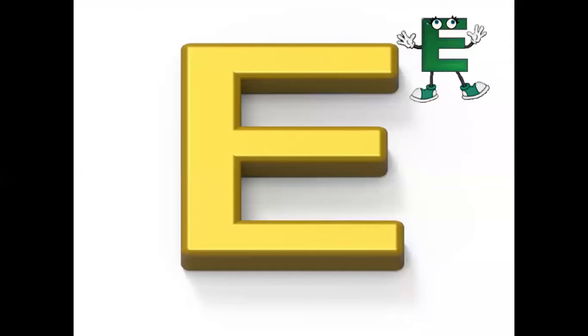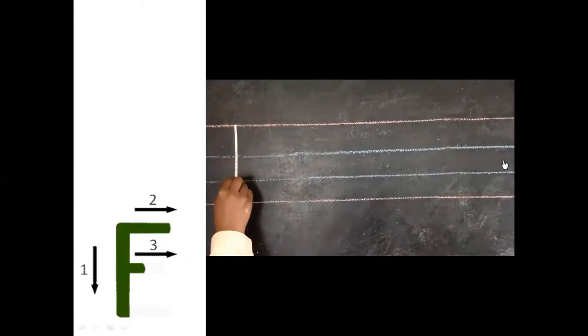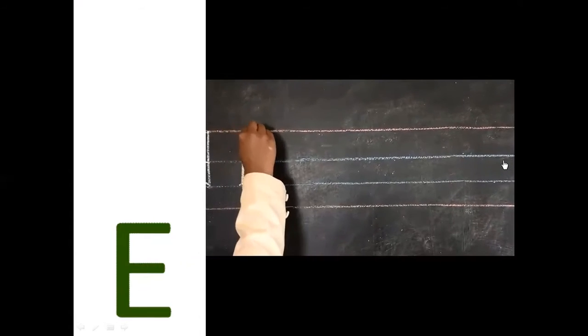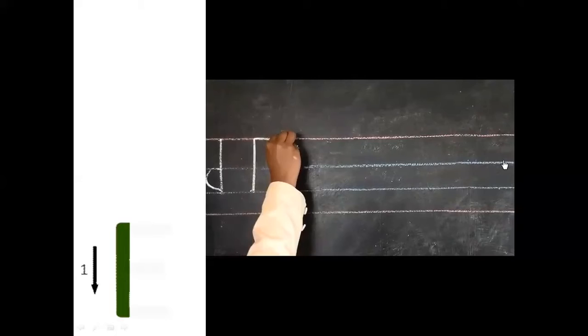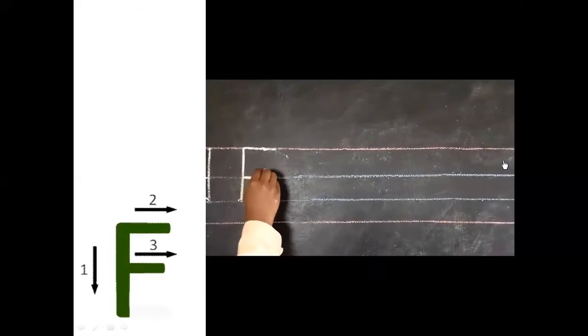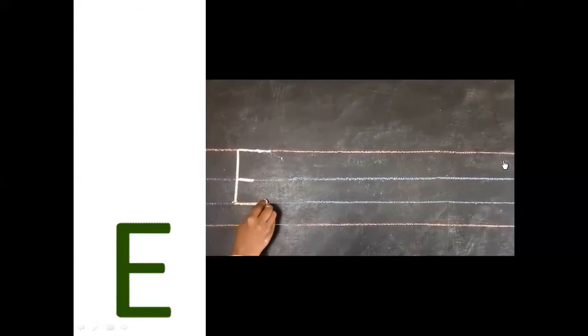So this is our capital E. Let's see how to write that in a four-line note. First, we start from the first to the third line — a standing line. And then from the same standing line, we draw a sleeping line on the first line. Then another sleeping line from the standing line on the second line, and then another sleeping line on the third line.